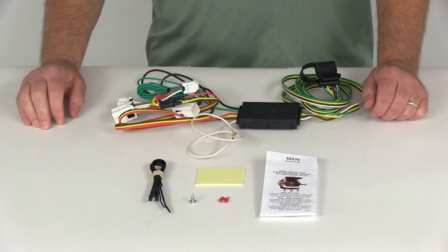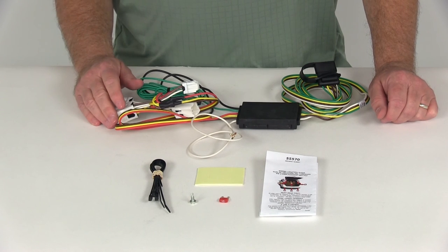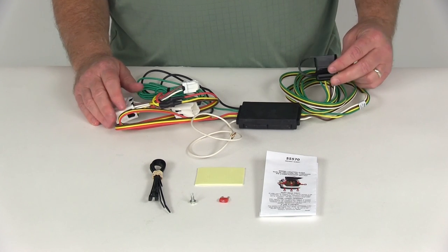But that should do it for the review on part number C-55570. This is the Curt T-Connector Vehicle Wiring Harness with the 4-Way Flat Trailer Connector.